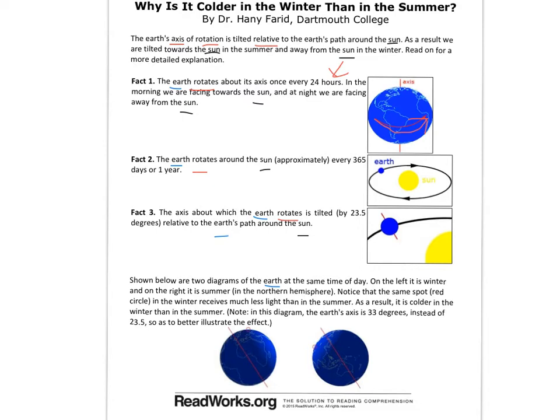So why is it colder in the winter than in the summer? When I look at winter and summer, now that I look at the title a little more closely, I'm thinking maybe just specifically between those two seasons. Let's begin with the text. The earth's axis of rotation is tilted relative to the earth's path around the sun. As a result, we are tilted towards the sun in the summer and away from the sun in the winter. Read on for a more detailed explanation. Fact one: the earth rotates about its axis once every 24 hours.